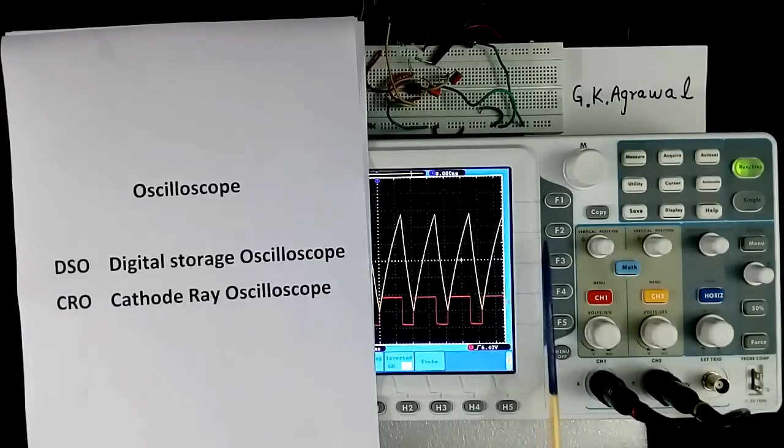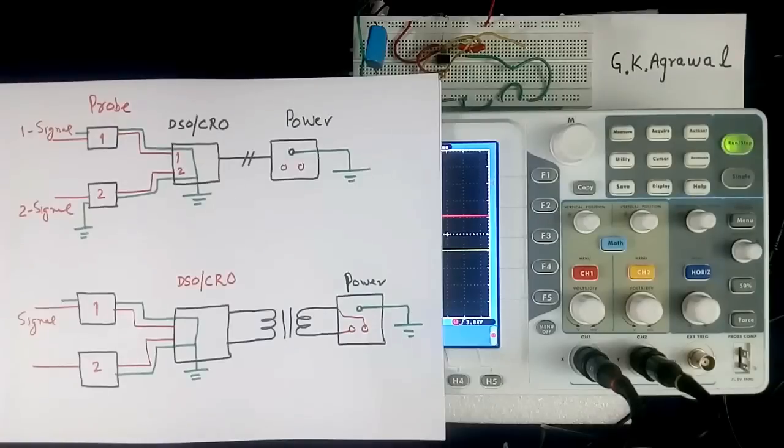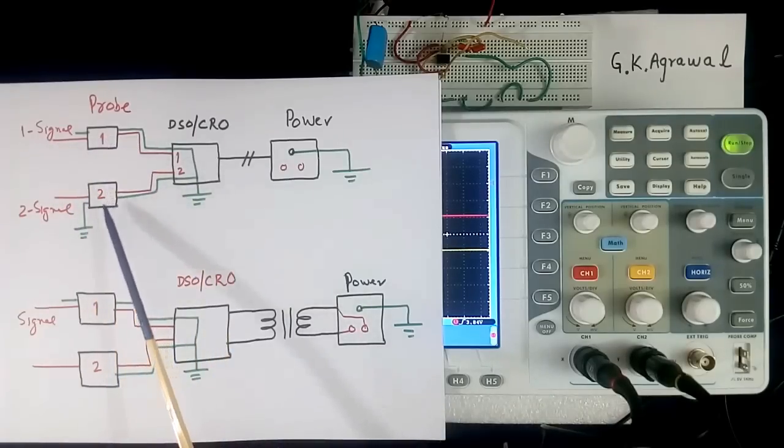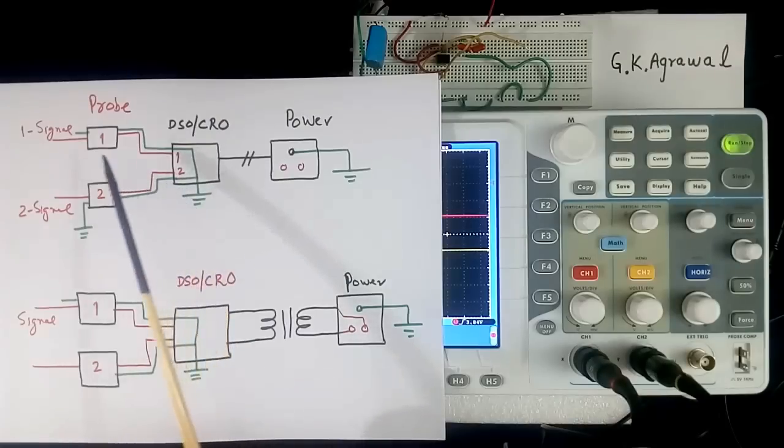This scope is DSO. Now I will tell first about earthing. This is power point. This is CRO. And two probes are connected. Probe 1 and probe 2, with channel 1 and channel 2.